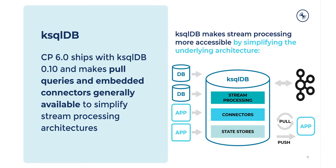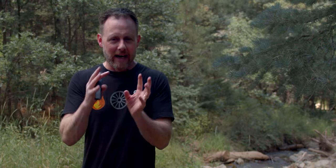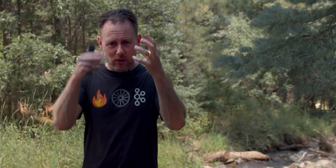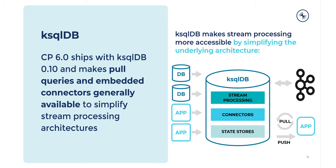Confluent Platform 6.0 includes ksqlDB 0.10. CP is, as usual, keeping pace with the rapid development of ksqlDB. Some cool new features in 0.10 include pull queries. I've been talking about pull queries for almost a year now, but they've been a preview feature — they are now GA, generally available in 0.10, therefore in Confluent Platform 6.0. A pull query is when I create a table in ksqlDB — say there's some stream and I group by a key and aggregate, that forms a table with a key and a value as the output of my aggregate function. That table is queryable by key. That's what a pull query is — it's like a regular database query, but now in this streaming database. Embedded Kafka Connect is now also a generally available feature.